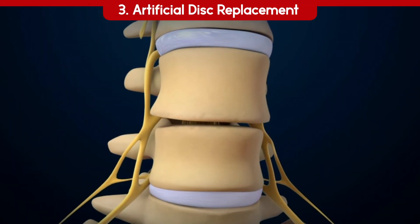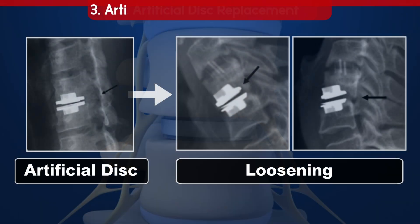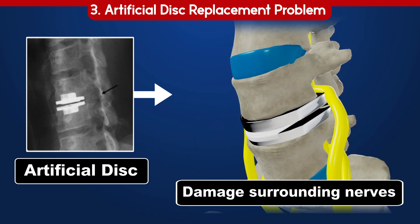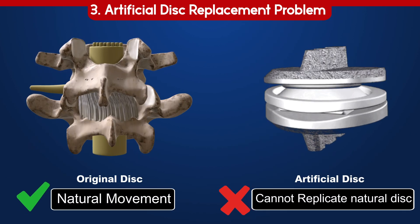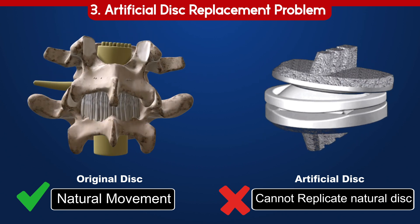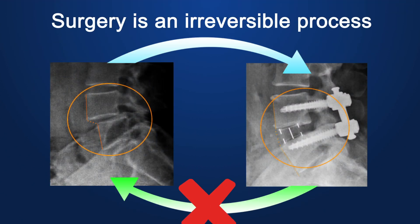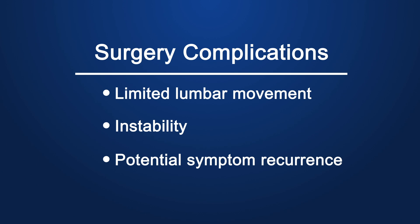3. Artificial disc replacement: This procedure involves replacing the damaged disc. An artificial disc can never integrate with the bone, which will eventually lead to loosening and damage to surrounding nerves. Although it aims to restore function, it cannot fully replicate the movement of the original disc and may affect the patient's daily activities. It is important to recognize that surgery is irreversible and can lead to complications, including limited lumbar movement or instability and potential symptom recurrence.